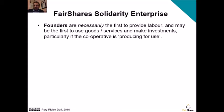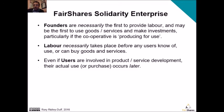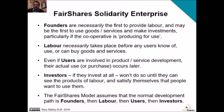Founders are necessarily the first people to provide labour, and they may also be the first to use the goods and services and make investments, particularly if the cooperative has been established to do production for use. Next come labour — they necessarily do things before any users know of, use or can buy goods or services. Even if users are involved in product and service development, they can't actually use or purchase them until later. Investors, in my experience, won't invest until they can see the products of labour and satisfy themselves that there are people who want to use them. So the order in which things occur is: founders first, then labour, then users, then investors.